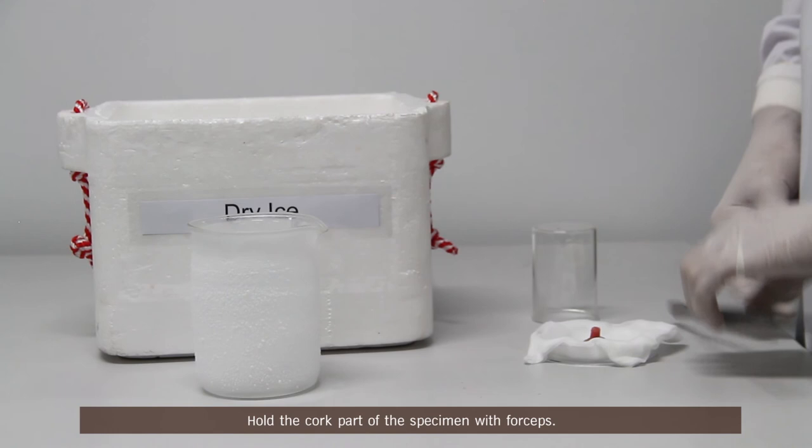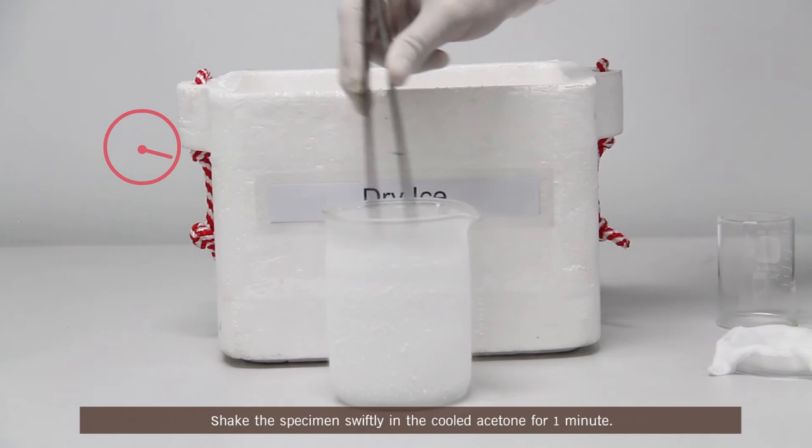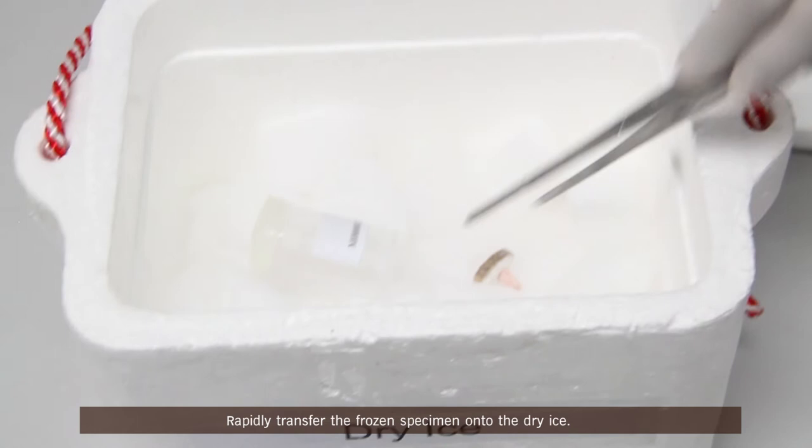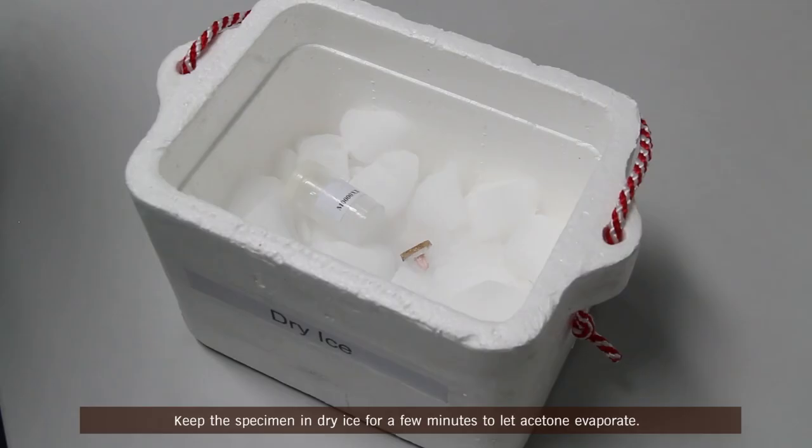Hold the cork part of the specimen with forceps. Shake the specimen swiftly in the cooled acetone for 1 minute. Rapidly transfer the frozen specimen onto the dry ice. Keep the specimen in dry ice for a few minutes to let acetone evaporate.